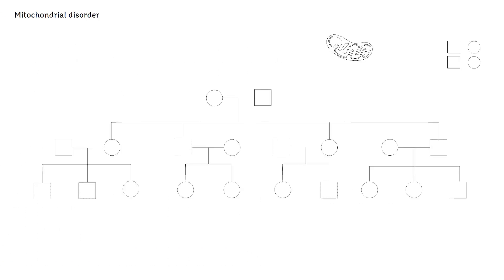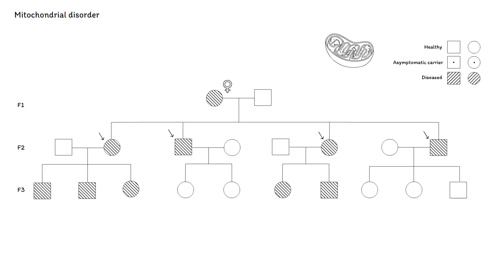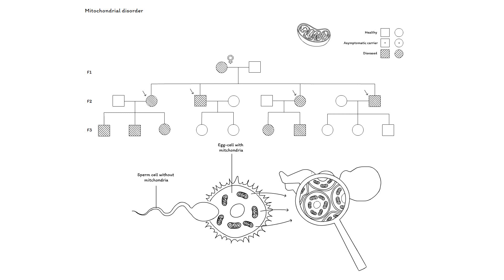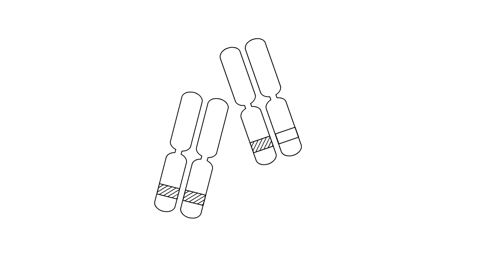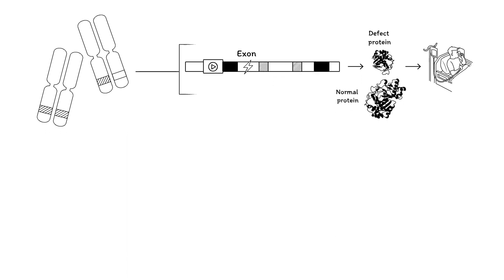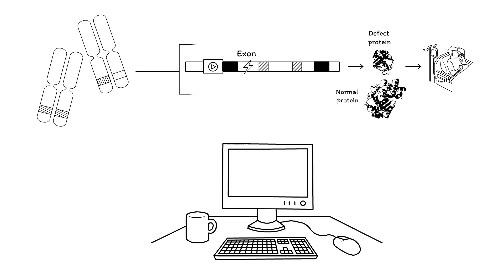Finally, mitochondrial disorders are strictly transmitted from mother to child, as the mitochondrial DNA of the embryo originates from the egg cell of the mother. Mendelian disorders are thus caused by one or two disease-causing variants that have big effects on the function of the gene. In the next video, we will discuss why variants are potentially so damaging that disease may arise.